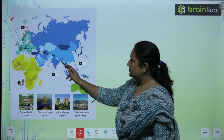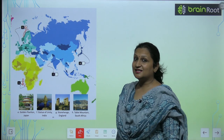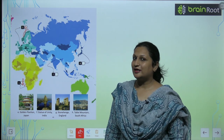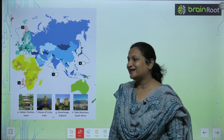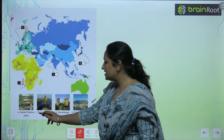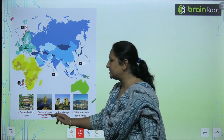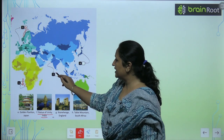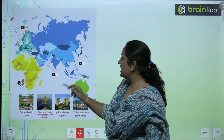Then here, this is our own country. Which country is it? India. So what is in India? Statue of Unity. So here you will write F.